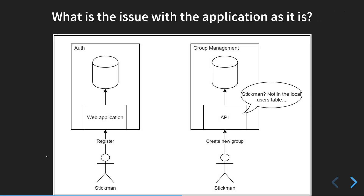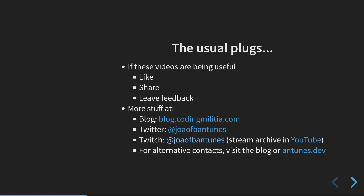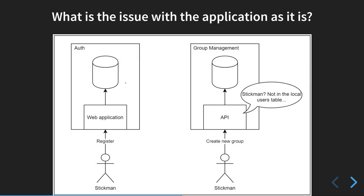As I mentioned, this will be more of an overview, so we have some more slides this time and probably no code. What is the issue with the application as it is right now? We have the auth service and the group management service, which are mostly disconnected. The only point of contact they have is when the user registers or logs in — a JWT token is generated with information about the user, and the web frontend keeps the JWT and passes it on to group management. But besides that, they are really disconnected.